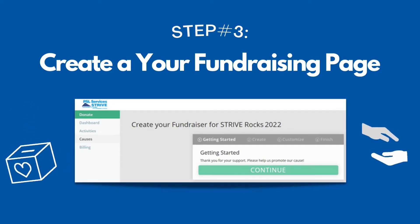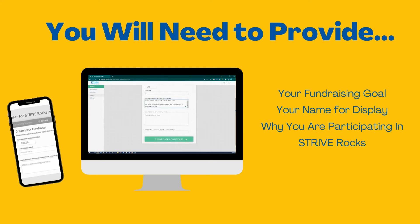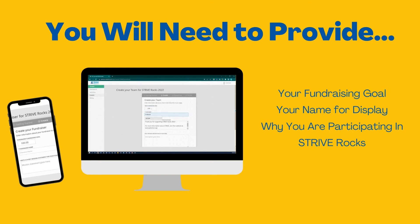Next, you'll be brought to this screen — click on the Continue button. Here you can set your goal that you'd like to raise for Strive Rocks this year. You can stick with the default $40 or make it as high as you'd like. Under the fundraiser name, enter your name or the names of anyone else you're fundraising with. You can write a short mission statement explaining why you want people to sponsor your Strive Rocks fundraising page. You can leave the event date blank because it will default to May 20, 2022, which is the start of Strive Rocks.